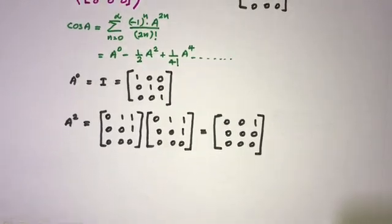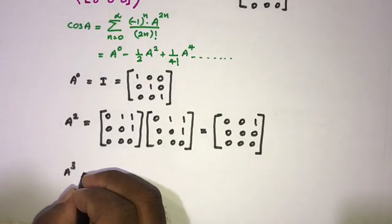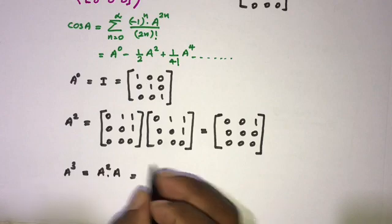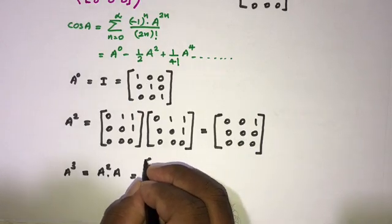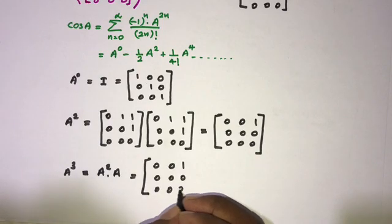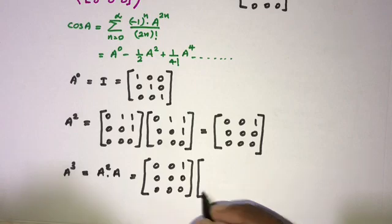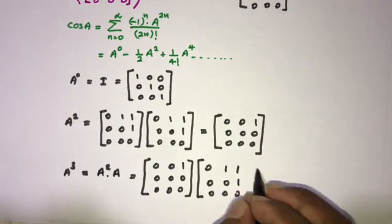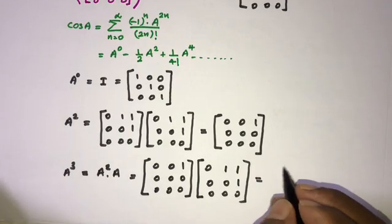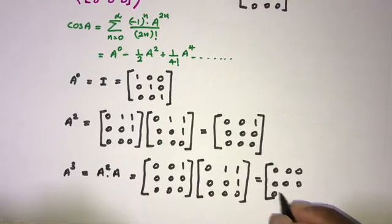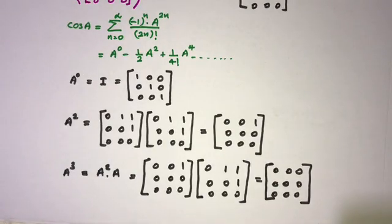Now we find A raised to the third power. We write A³ = A² times A. Using A² = [0,0,1; 0,0,0; 0,0,0] and multiplying by A = [0,1,1; 0,0,1; 0,0,0], simplifying gives us the zero matrix [0,0,0; 0,0,0; 0,0,0].